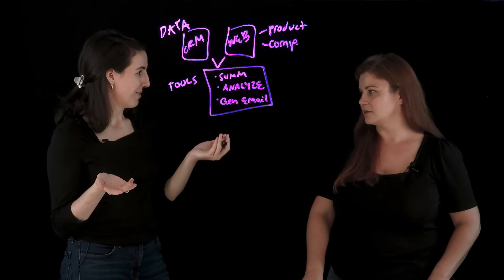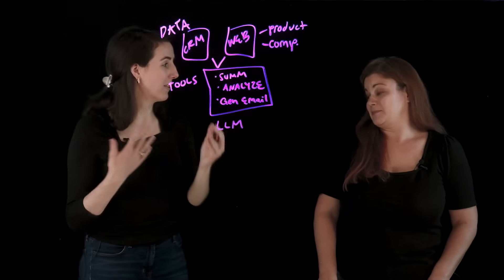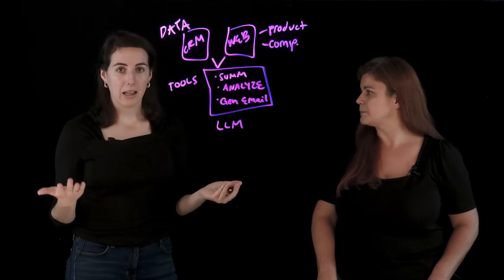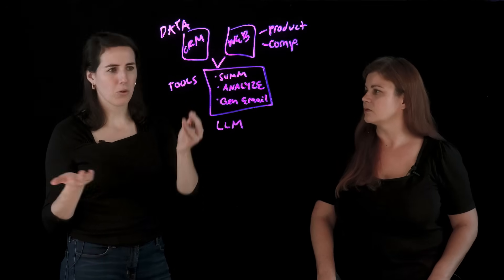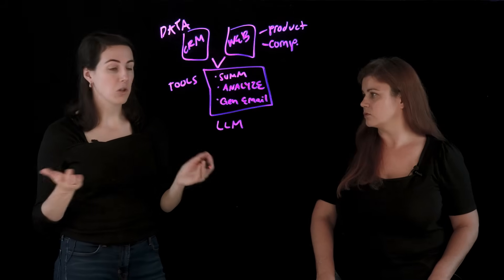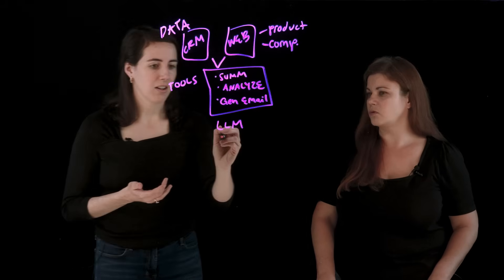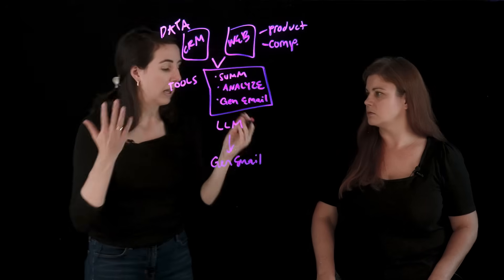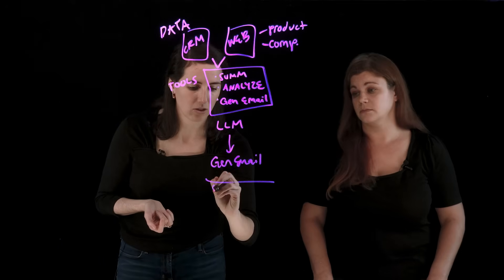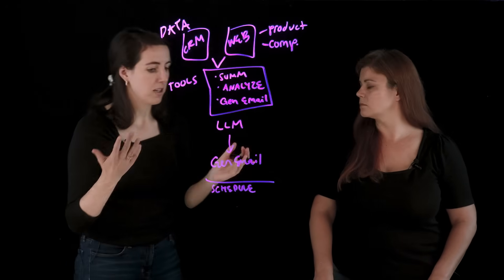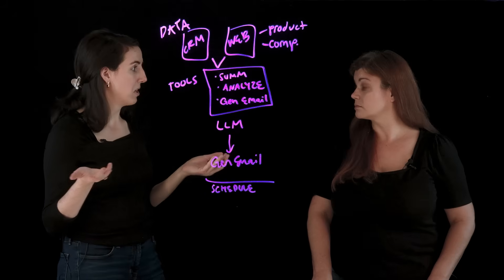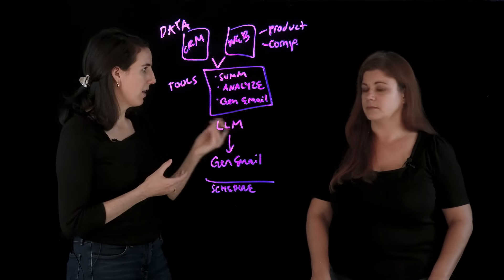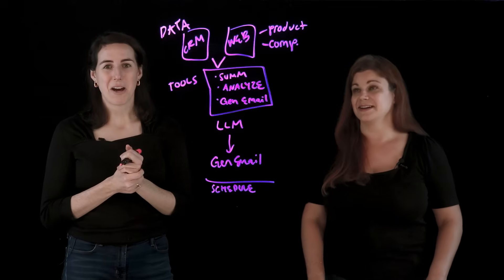Next, we're going to choose our LLM. You might not know which one to start with — you'd want to test out a few LLMs to figure out which works best for your use case. You might even use different ones for different tools within your agent. Then we take that action, pull it into our tools, and generate an email to send to our client. We might also want scheduling — to schedule the send, get reminders over time on when to send different emails and content — so the whole process is really automating the outreach.